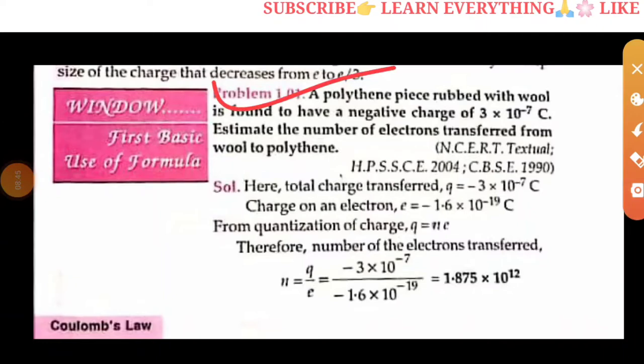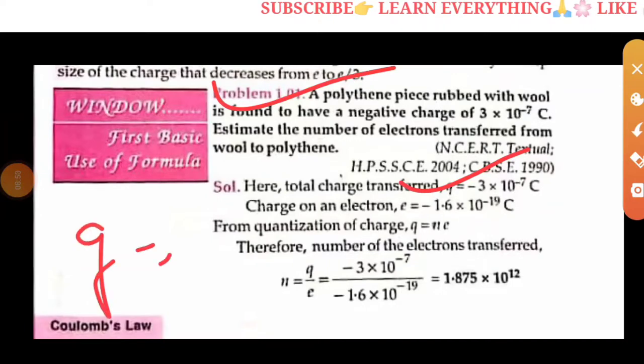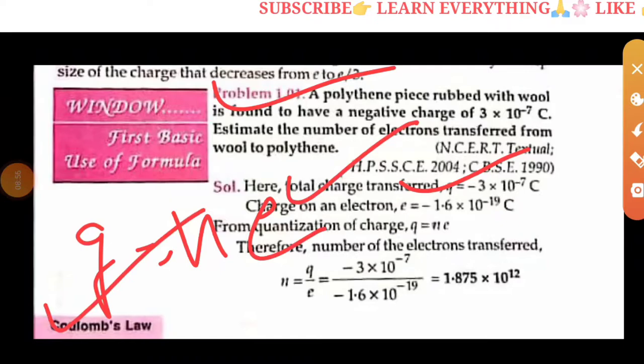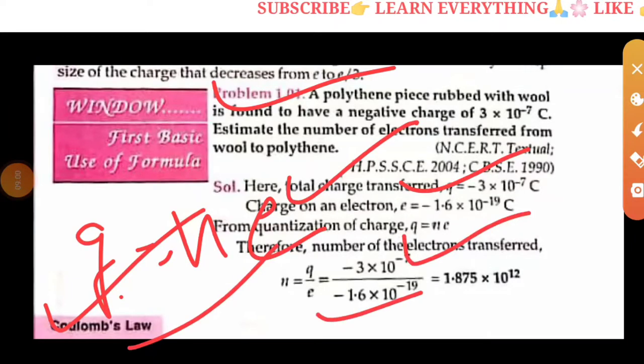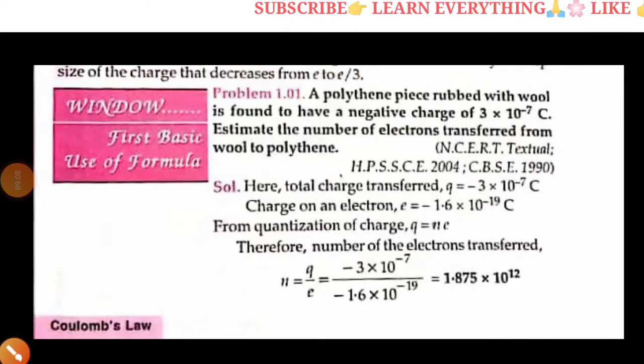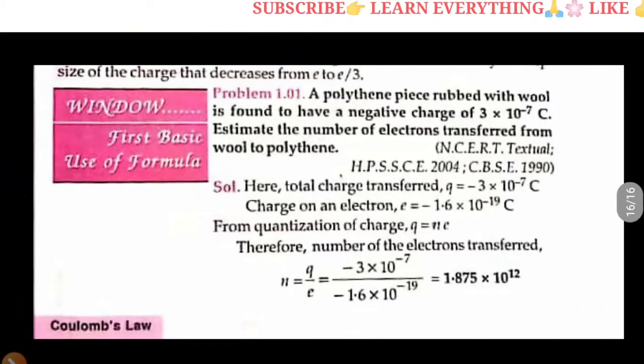Next problem: Negative charge of 3 into 10 to the minus 7 coulombs after electron transfer. The electron charge is minus 1.6 into 10 to the minus 19. These are simple questions. If you like this video please like and comment, and thank you for watching.